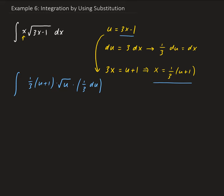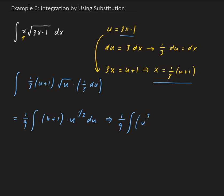So we have everything we need. This is equivalent to one ninth times the integral of (u plus 1) times u to the one half du. Distributing u to the one half, that gives us u to the three halves plus u to the one half du.